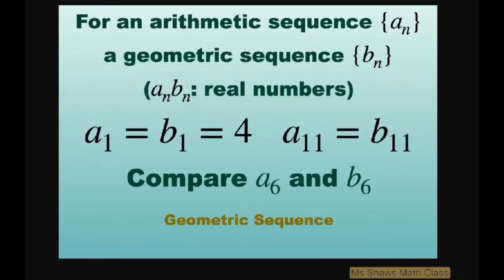Hi everyone. For an arithmetic sequence {a_n} and a geometric sequence {b_n}, our first terms both equal 4 and our 11th terms of both sequences are equal to each other. We're going to compare the 6th terms.